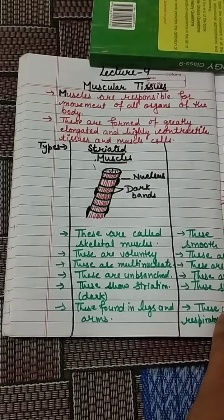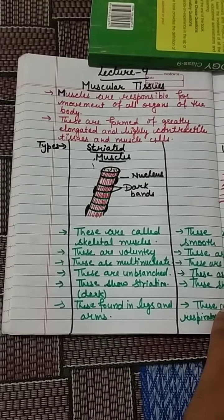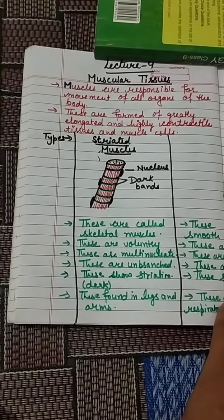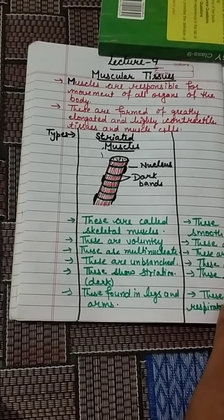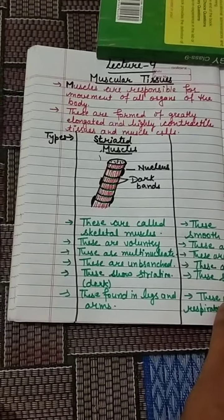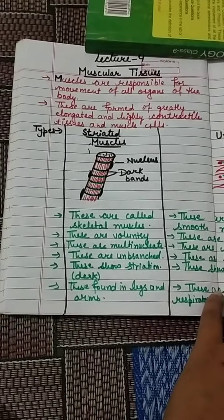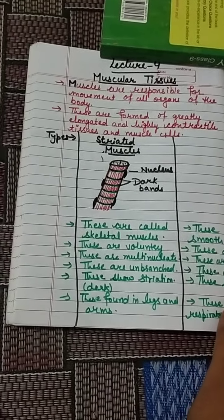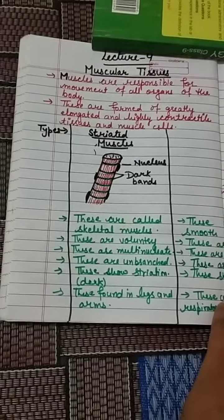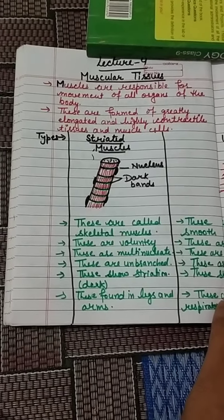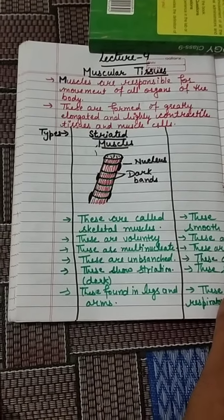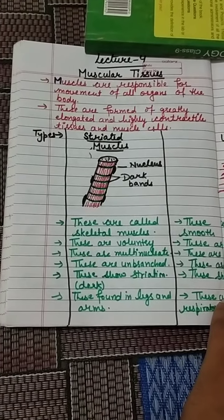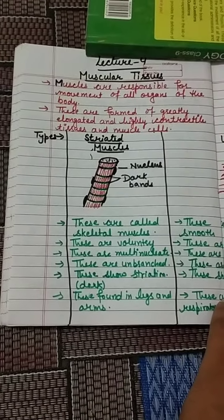Muscular tissues are formed by greatly elongated and highly contractile tissues. Muscle cells have a special type of proteins which help in the contraction and relaxation of the muscle fibers, and that helps in the movement of body parts. We also have the skeletal system that moves with the help of muscular tissues and muscle fibers.